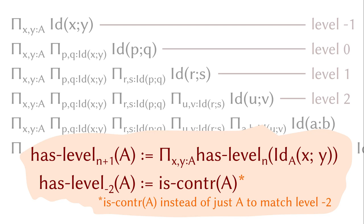The only thing we did not explain is that in the base case, we use the contractibility of the type A, instead of A itself. Being contractible is stronger than being inhabited, and this stronger condition is to match the spatial truncation level minus two. We will see why it makes sense to have contractibility later.